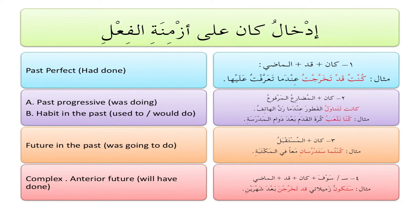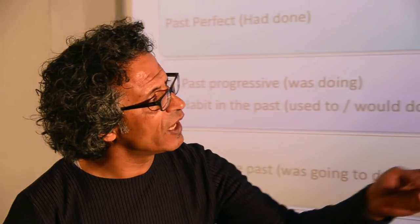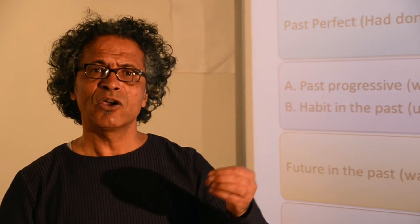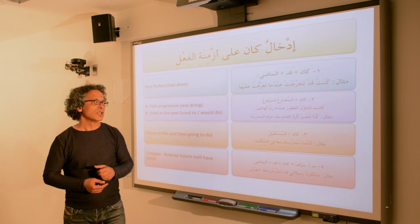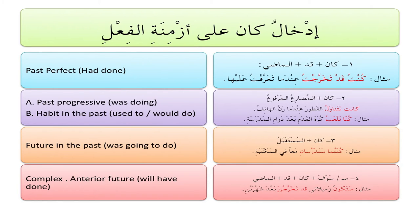The second possible combination is كان مع المضارع المرفوع, and it gives us one of two meanings depending on context. It can be the past progressive — 'was doing something' — as in: كانت تتناول الفطور عندما رنّ الهاتف — she was eating her breakfast when the phone rang. The second use is habit in the past — 'used to do' or 'would do' — a habit not continuing in the present. Example: كنا نلعب كرة القدم بعد دوام المدرسة — we used to play soccer after school.